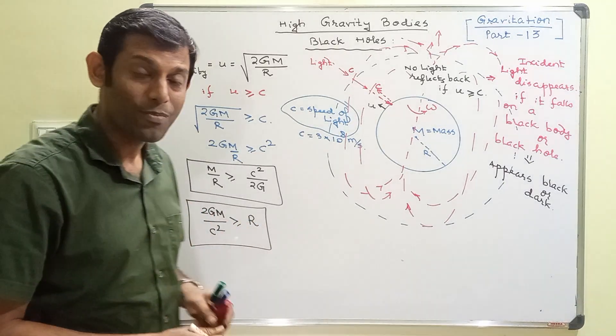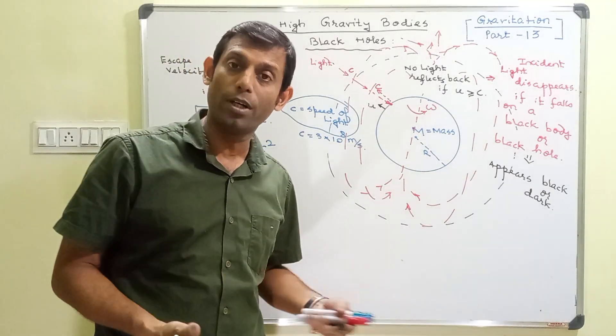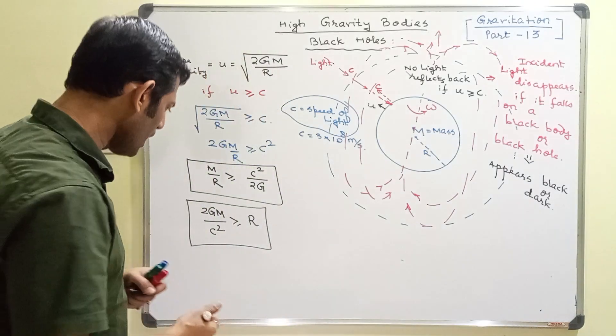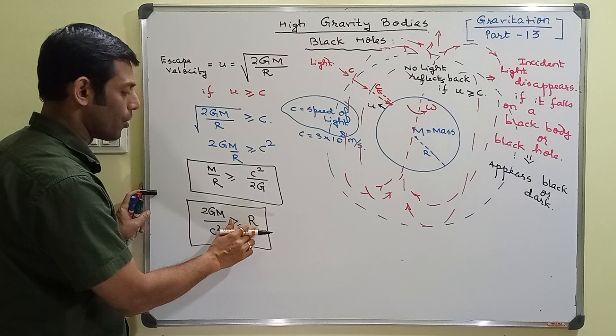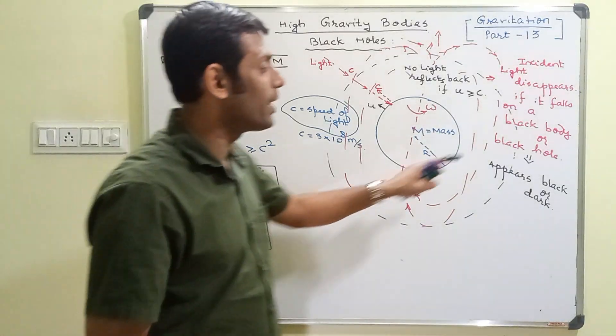The mass of the body is given. Let's say by some means we can calculate the mass of that body. Then 2GM by c square that exceeds the radius of that body, then that can be classified as a black hole.